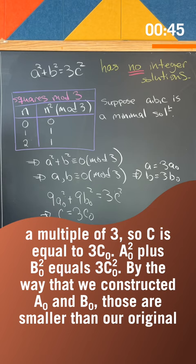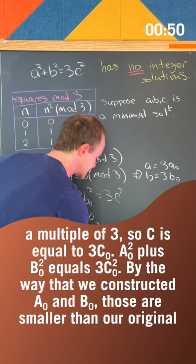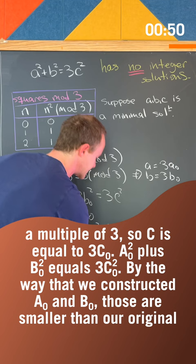A naught squared plus b naught squared equals 3c naught squared. By the way that we constructed a naught and b naught, those are all smaller than our original a and b, contradicting the minimality of our solution.